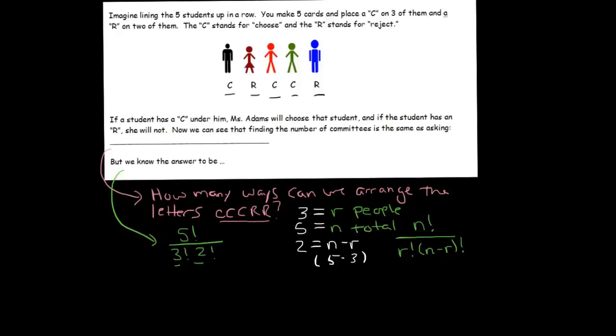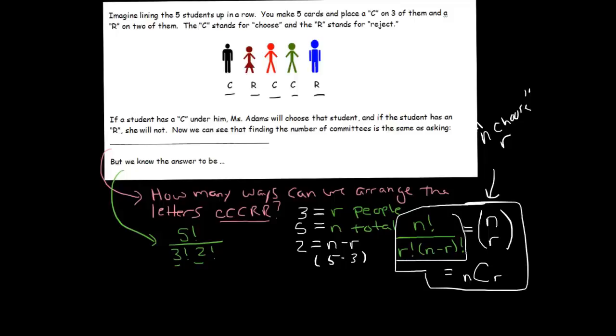Now this is a key formula. Sometimes you'll see it written like this, N, R in parentheses. And that's often pronounced N choose R, because you have N objects and you're choosing R of them. But it's also sometimes written in this form, an N, a big C, and then an R. Those all just mean the same thing, but the key thing to remember is this right here. That would be the answer to our original problem involving Ms. Adams choosing a committee of 3.